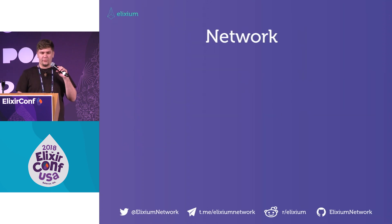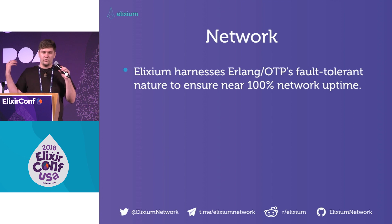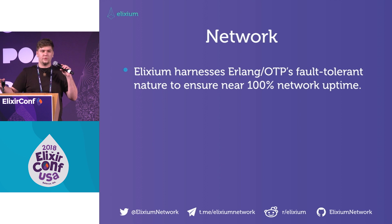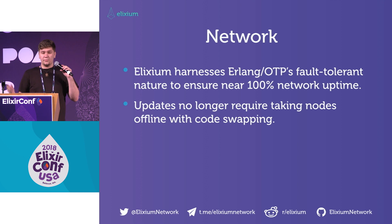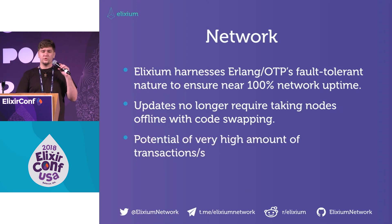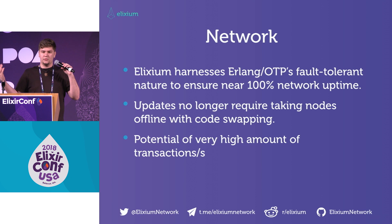It consists of three main things — obviously the network. It uses Erlang OTP, so it has very near 100% network uptime because you have all these distributed nodes, and each of those nodes has their own supervisor that's making sure that if anything goes wrong, it can come back online really easily. Updates for any of the software running behind the blockchain no longer require any downtime because you have hot code swapping brought to you by OTP. And there's potential for a very high number of transactions per second just because of the speed and semi-low-levelness that Erlang brings.